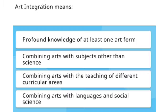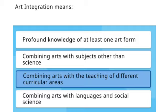Next: Art integration means — profound knowledge of at least one art form, combining arts with subjects other than science, combining arts with the teaching of different curricular areas, or combining arts with languages and social science? The right answer is option three: combining arts with the teaching of different curricular areas.